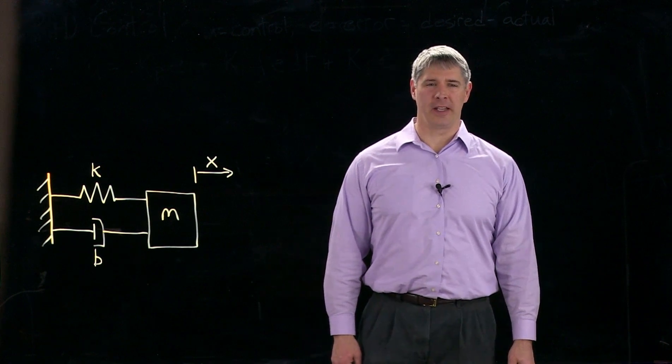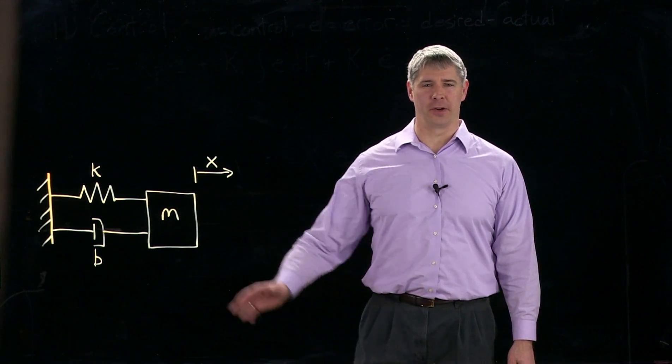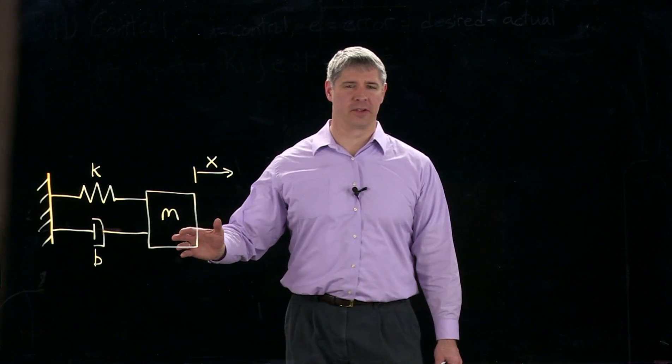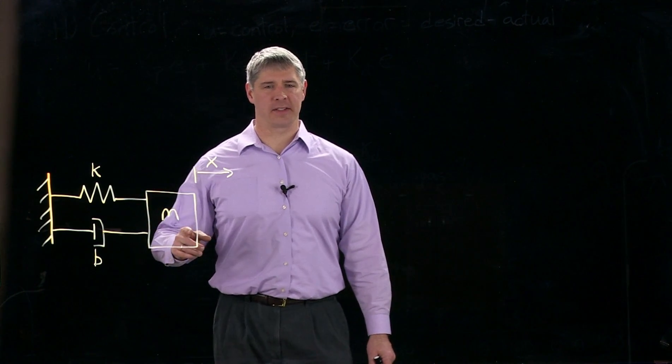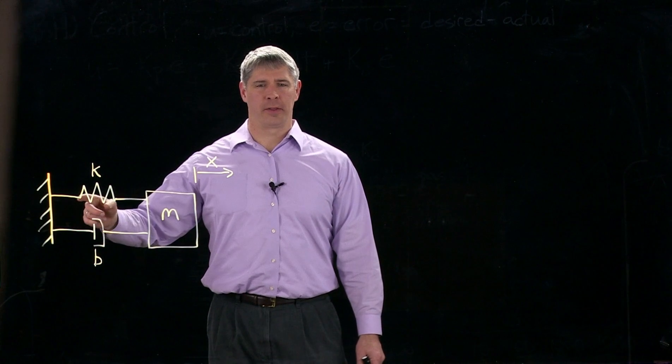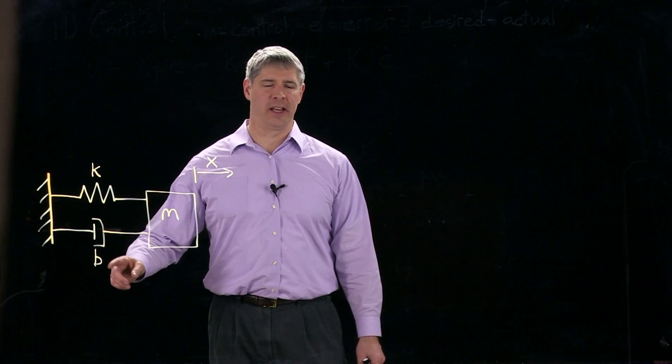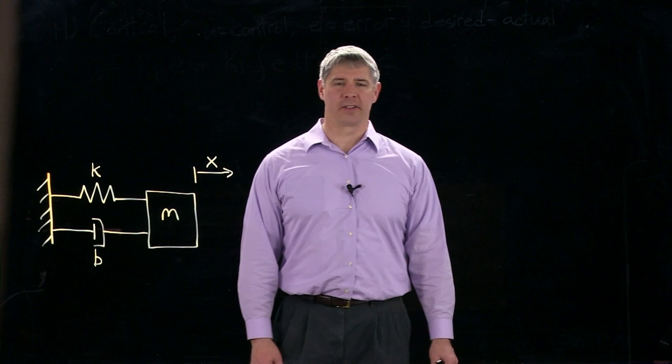Let's look at an example of a PID controller applied to control a mass spring damper system. So M here is our mass. It's attached to ground through a spring with spring constant K and a damper of damping constant B.